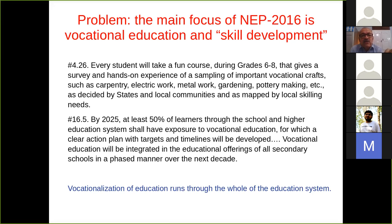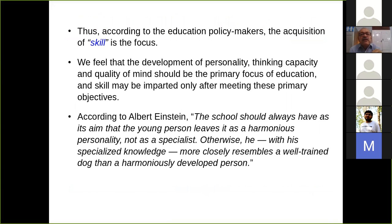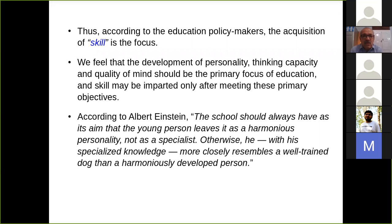This focus on skill rather than developing the thought process and thinking individuals goes 180 degrees different from what was initially stated, which I said I liked. We feel that the development of personality, thinking capacity, and quality of mind should be the primary focus. Students should be able to argue rationally and think rationally — that should be the primary objective. Albert Einstein says: 'The school should always have as its aim that the young person leaves it as a harmonious personality, not as a specialist. Otherwise he, with his specialized knowledge, more closely resembles a well-trained dog than a harmoniously developed person.' I find it rather disturbing that the whole focus of the education system is on vocational education.